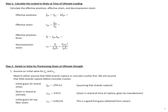Our first step is to calculate our effective pre-stress, effective strain, and decompression strain. Our effective pre-stress is our jacking stress, 175 ksi, minus our total pre-stress losses, 31.5 ksi, which gives us an effective pre-stress of 143.5 ksi. Our effective strain is then the stress, 143.5, divided by the modulus, which is 24,500 for our high-strength stainless steel strands, giving us an effective strain of 0.00586.